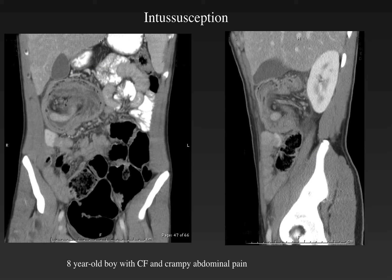Here is another example of intussusception causing obstruction. The child has cystic fibrosis and crampy abdominal pain. A mucus-filled, distended appendix serving as a lead point is seen in a colocolonic intussusception causing small bowel obstruction. A large fluid-filled appendix or the distal intestinal obstruction syndrome can be a cause of intussusception and obstruction in cystic fibrosis.